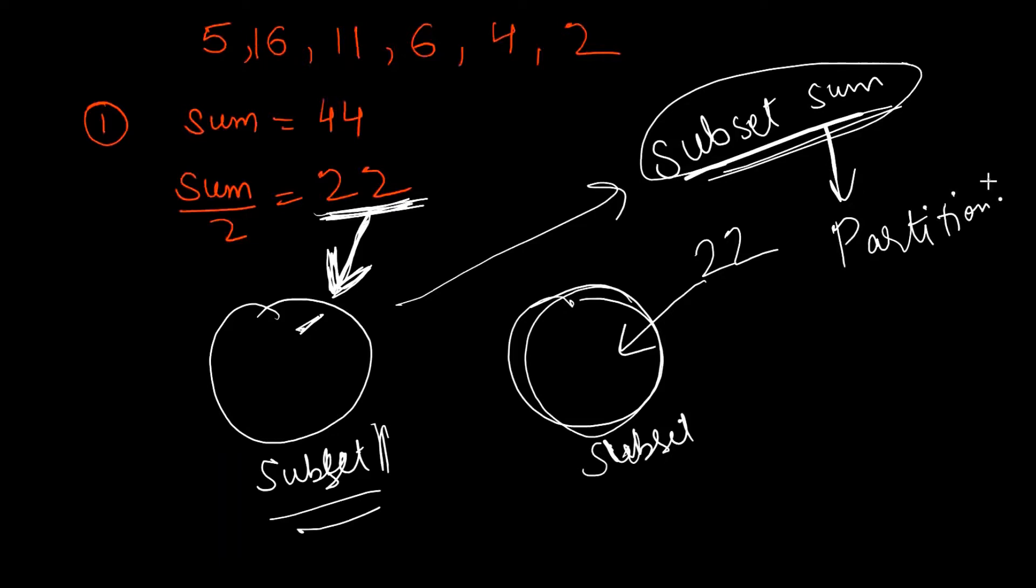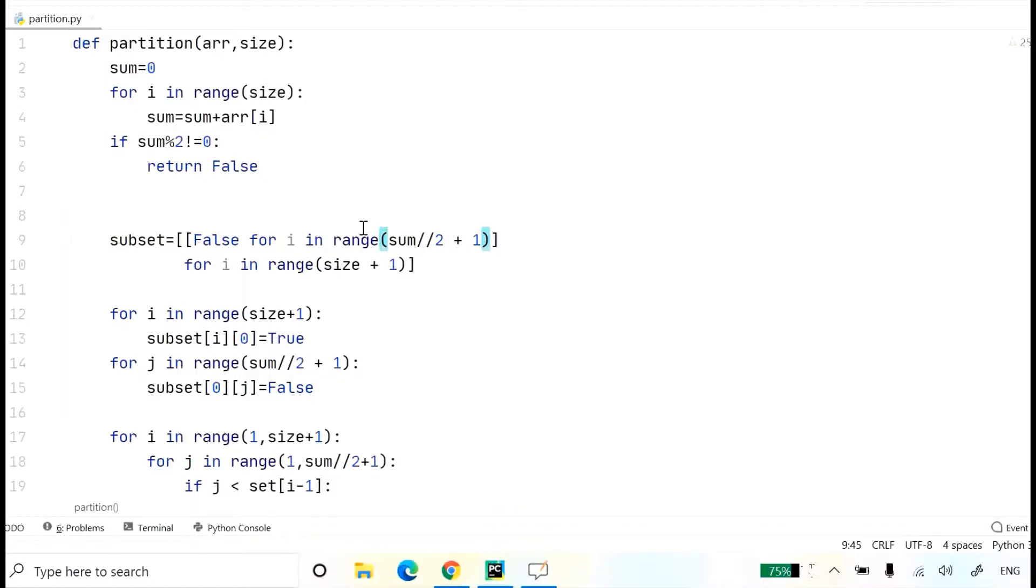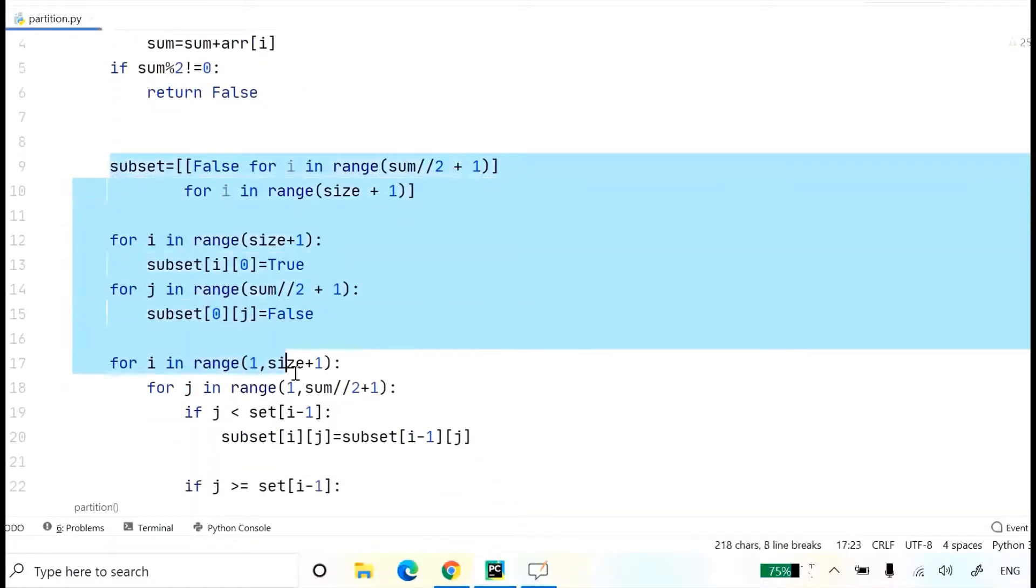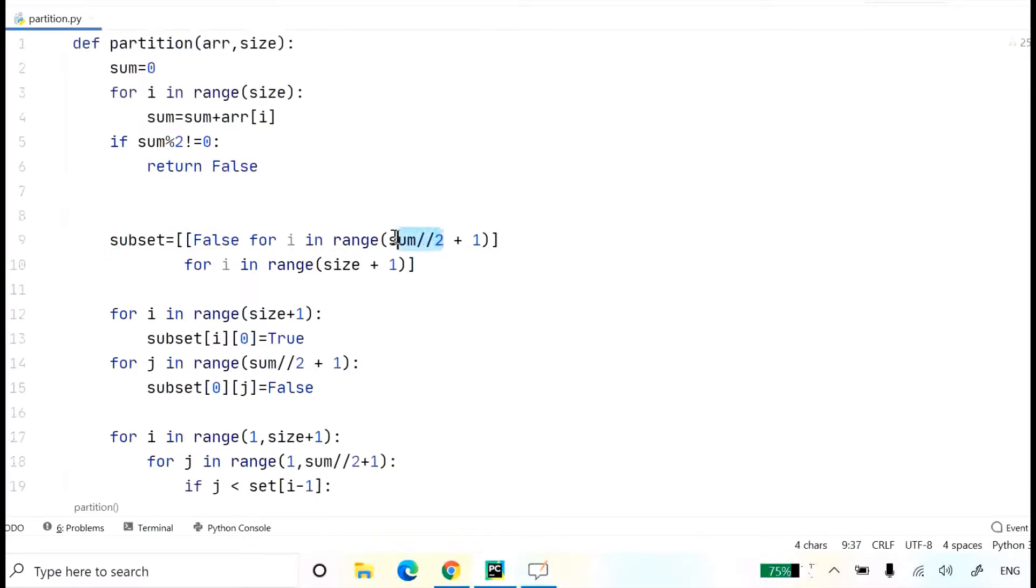So let's go to Python. And here I have a Python code, this is subset sum. But instead of sum, I have written here sum by 2, so as to calculate up till sum by 2. Now for this code, we have seen whether this sum is even or not. If it is odd, then it will return false then and there.